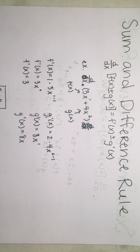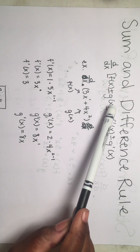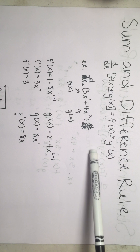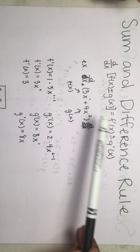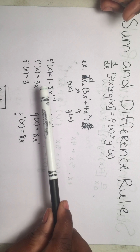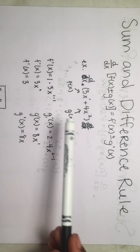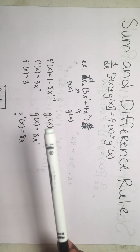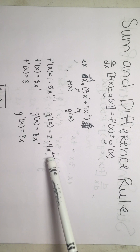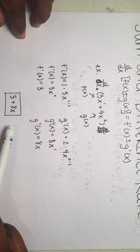The sum and difference rule applies when you have two terms separated by a plus or minus sign. Labeling them f of x and g of x, the derivative of f of x plus or minus g of x equals f prime of x plus or minus g prime of x. For example, the derivative of 3x plus 4x squared: the first term gives one times three x raised to zero, which is three. The second term gives two times four x raised to one, which is eight x. The final answer is three plus eight x.